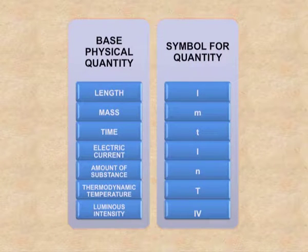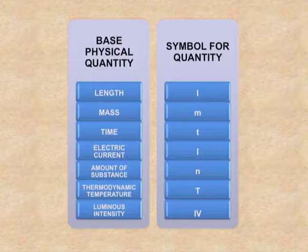The symbols for these quantities are: for length, small l; for mass, small m; for time, small t; for electric current, capital I; for amount of substance, small n; for thermodynamic temperature, capital T; and for luminous intensity, it is Iv.